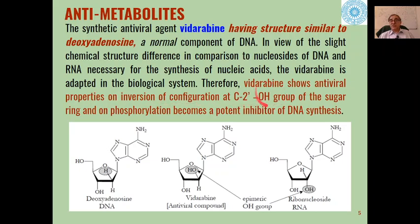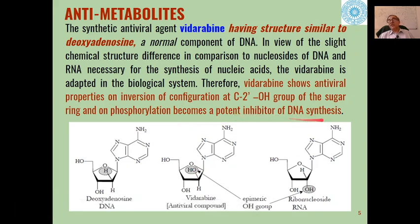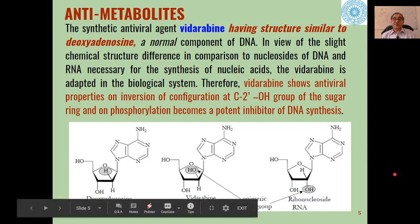On inversion of configuration at C2 and phosphorylation of the OH group of the sugar ring, vidarabine becomes a potent inhibitor of DNA synthesis. Phosphorylating the hydroxyl group converts it to a phosphate, making it an inhibitor of DNA synthesis — acting as an antimetabolite adapted in the biological system.